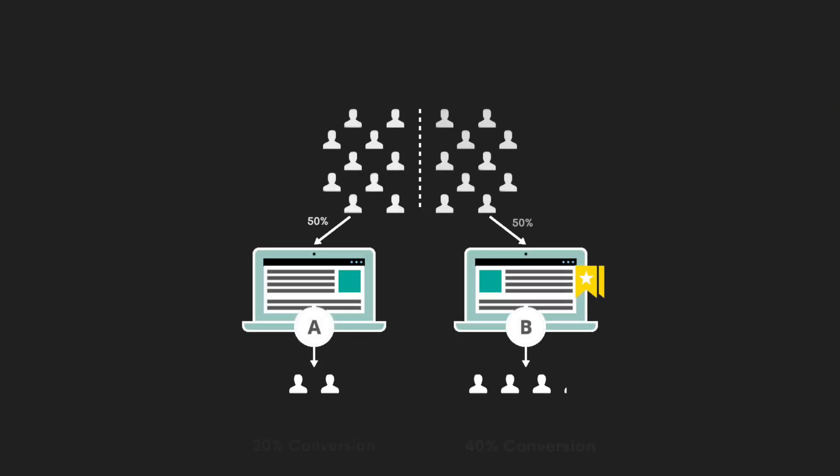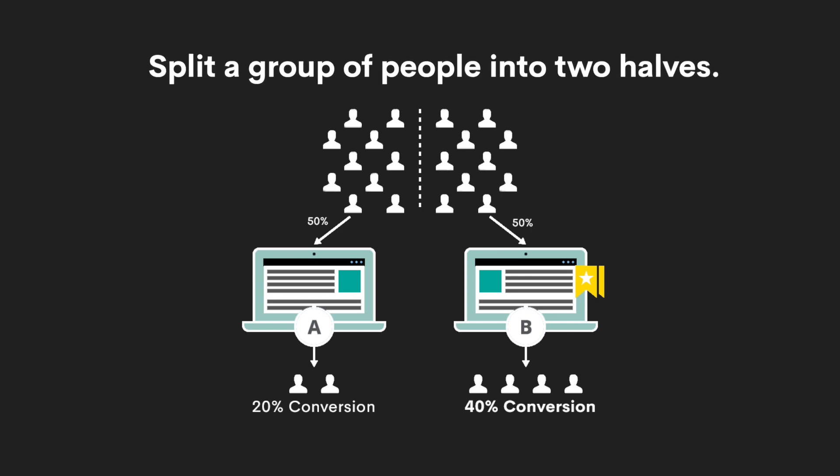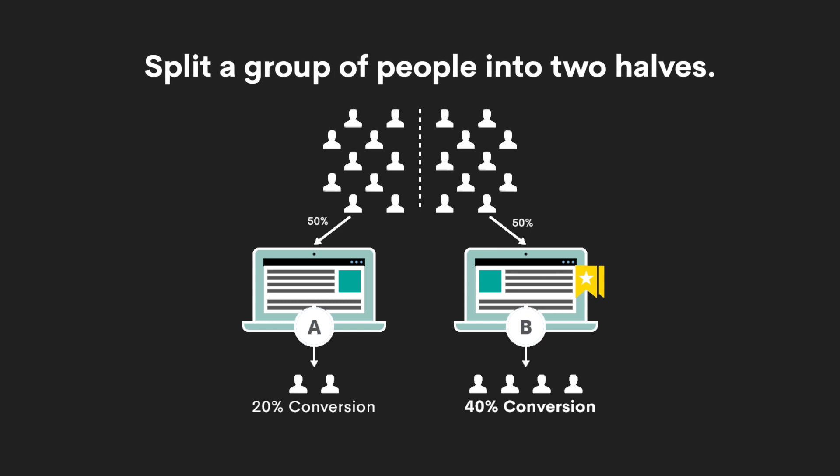For example, is this new feature better? Does it really lead to more clicks? Basically, what you're trying to do is split a group of people into two halves — offer one half option A, and the other half option B, and then see which option performs better.